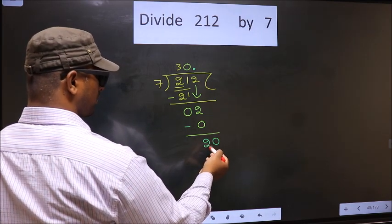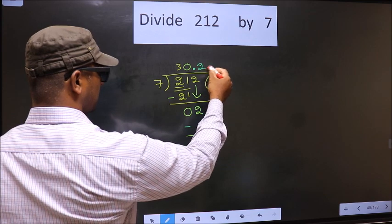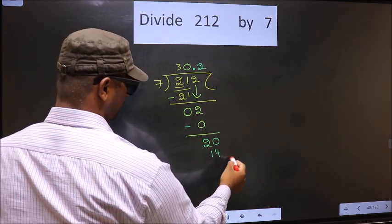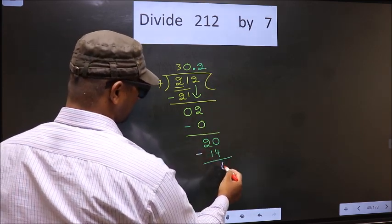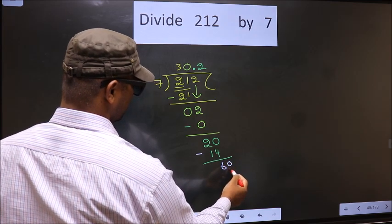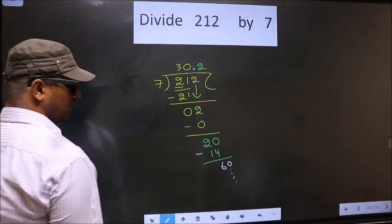A number close to 20 in 7 table is 7 times 2, which is 14. You subtract, you get 6. Smaller, take 0, continue the division. I am not doing that.